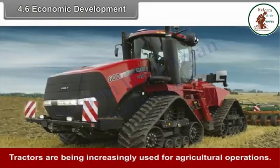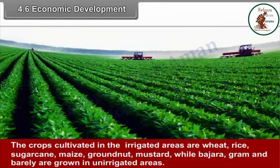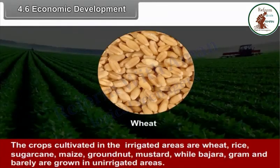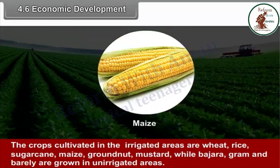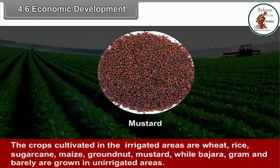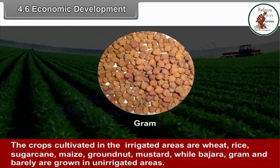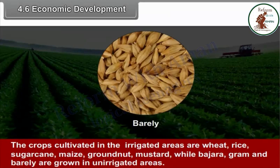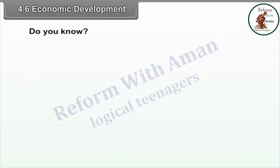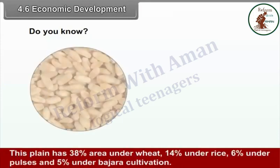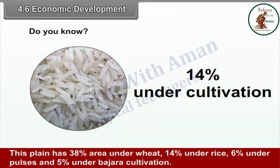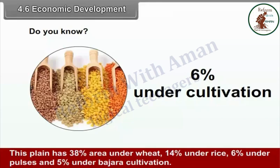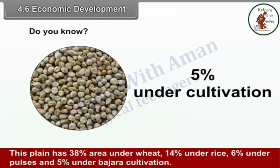Tractors are being increasingly used for agricultural operations. Crops cultivated in irrigated areas are wheat, rice, sugar cane, maize, groundnut and mustard, while bajra, gram and barley are grown in unirrigated areas. This plain has 38% area under wheat, 14% under rice, 6% under pulses and 5% under bajra cultivation.